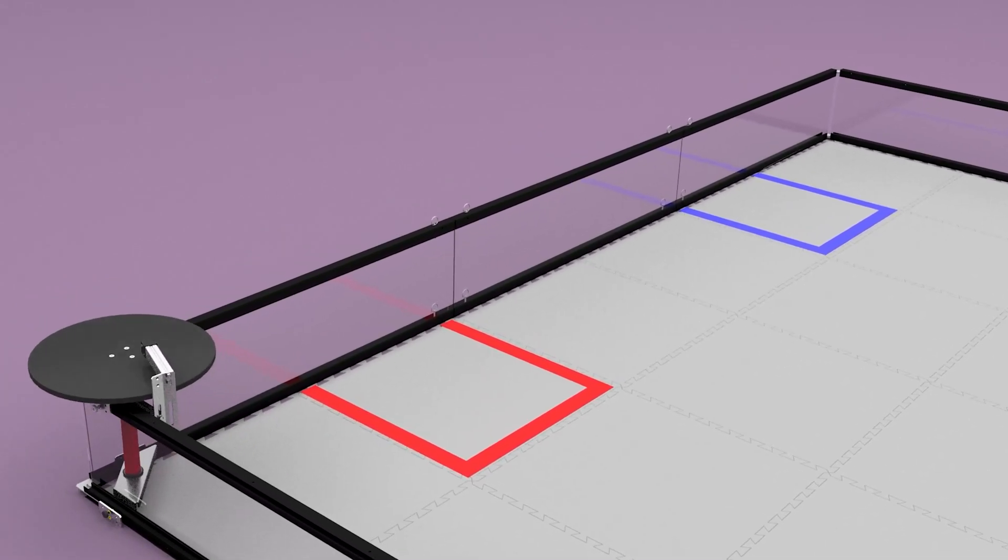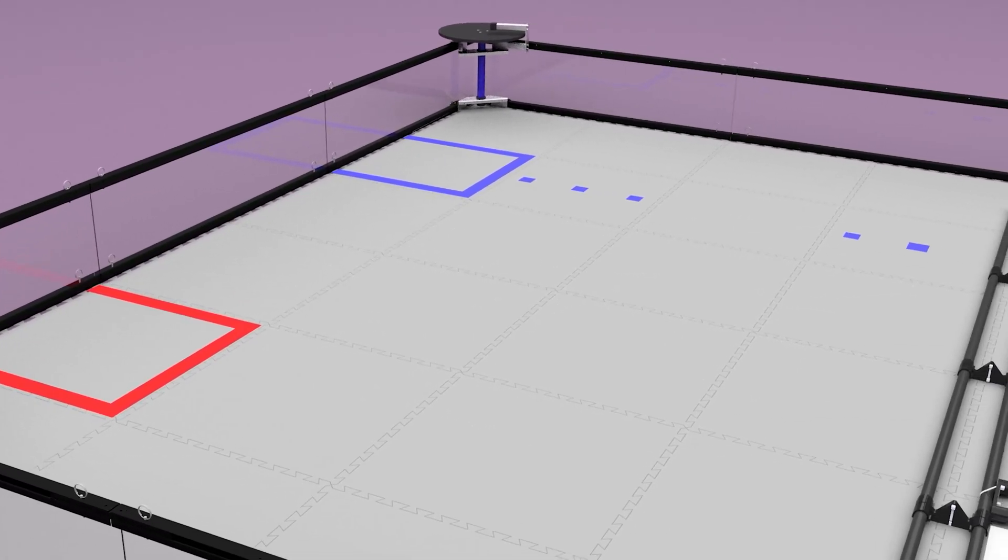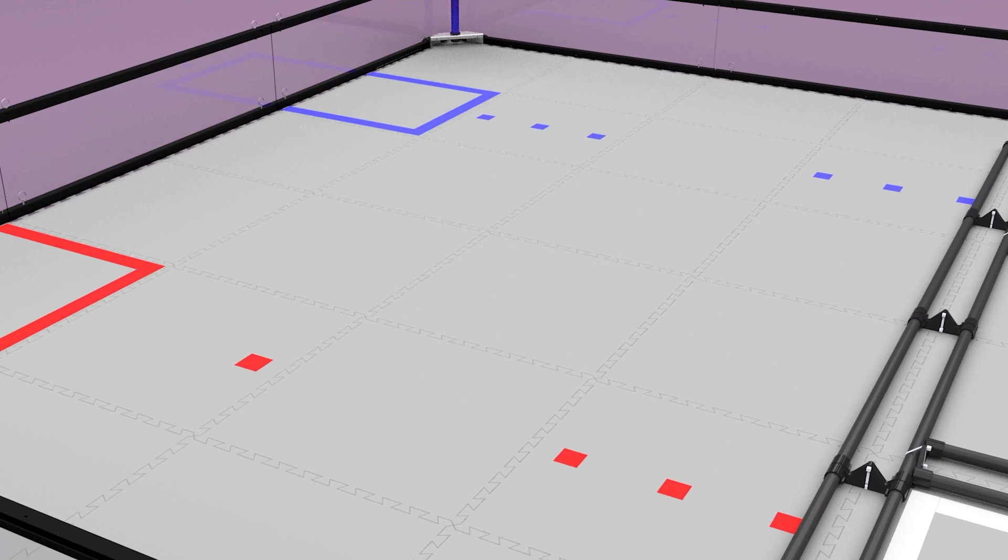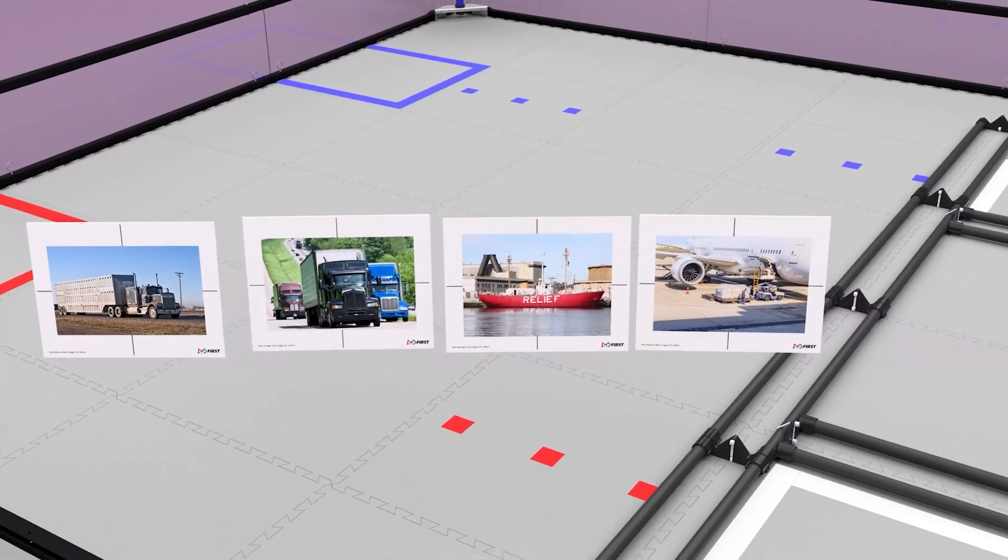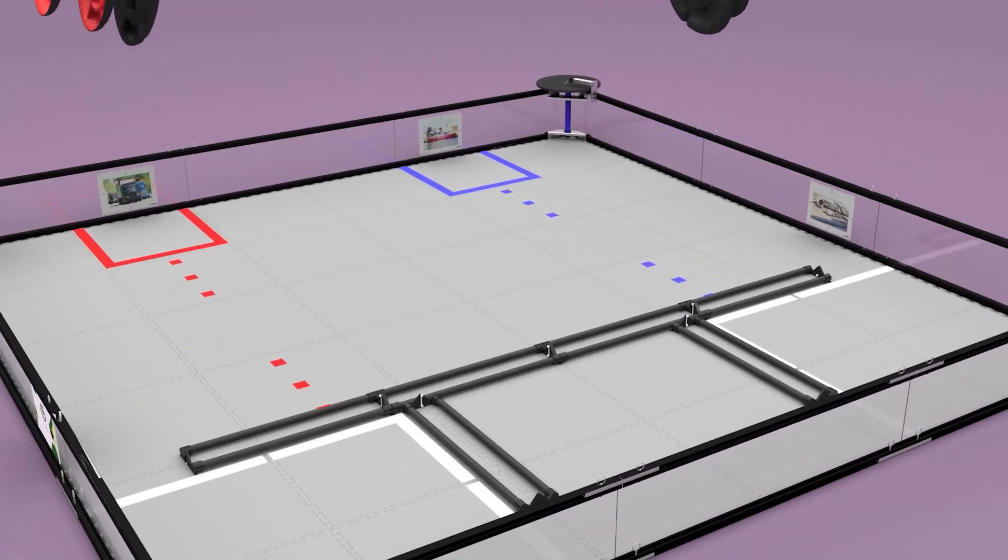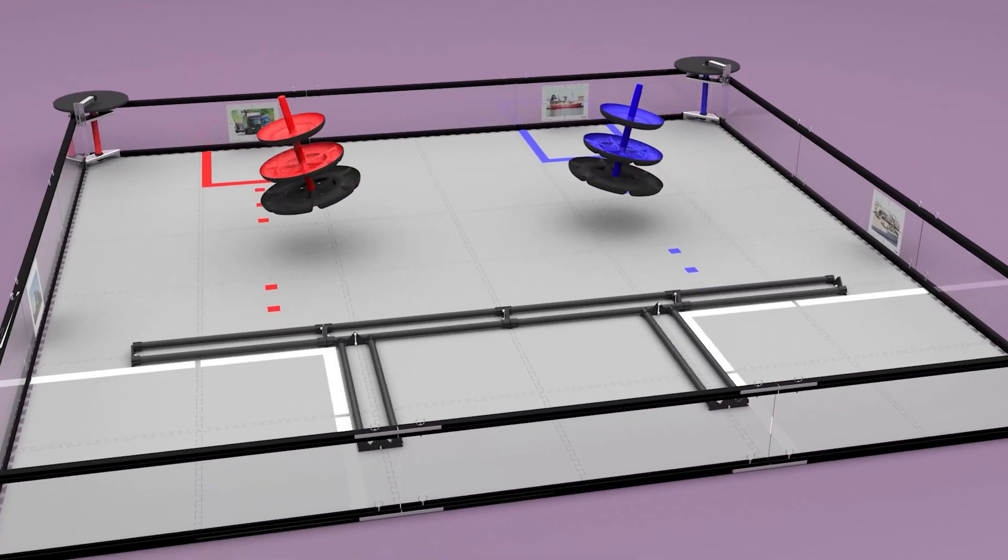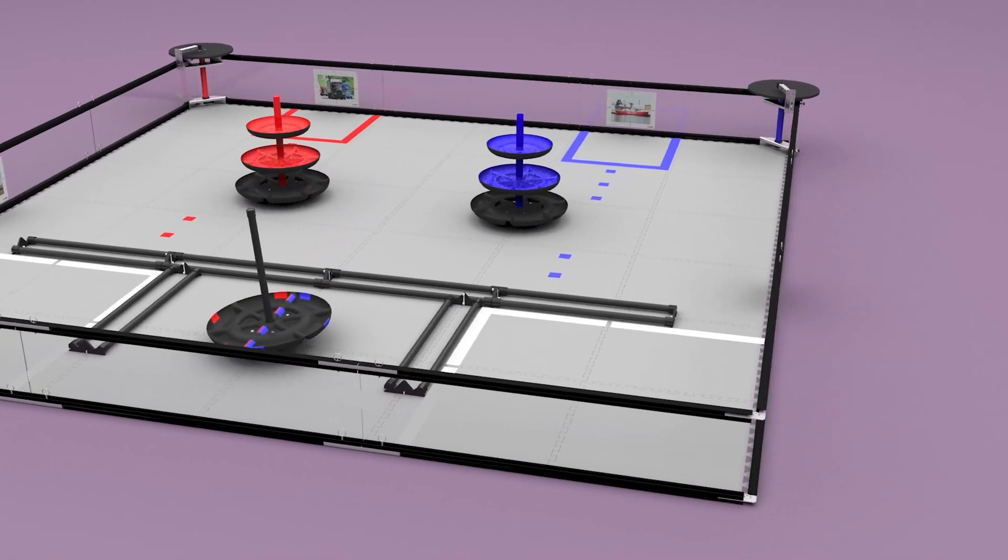Alliance-specific carousels are mounted on the front corners of the field walls. Alliance-specific barcode tape is located between the warehouses and the storage units. Four unique navigation images are located around the field perimeter. Two alliance-specific shipping hubs and a third shared shipping hub are positioned as shown.